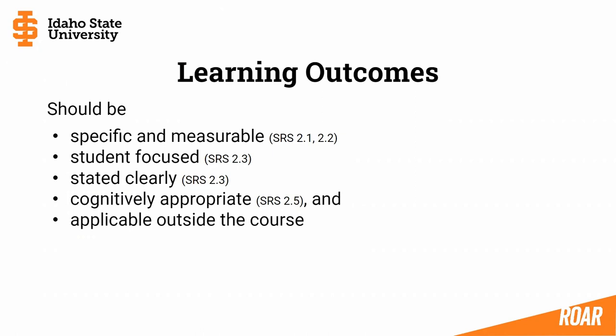Outcomes should also be student-focused, describing student actions and achievements, as well as clearly stated — both tied to specific review standard 2.3. They should also be cognitively appropriate for the level of the course and students, tied to specific review standard 2.5. And outcomes at the course level should describe student actions and achievements that have value outside of the course — another way to say this is how are your students going to describe the skill on their resume.